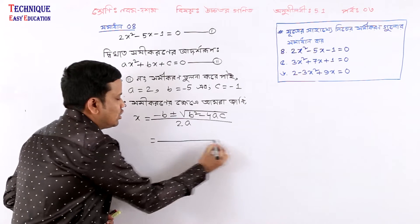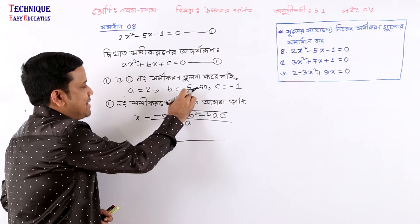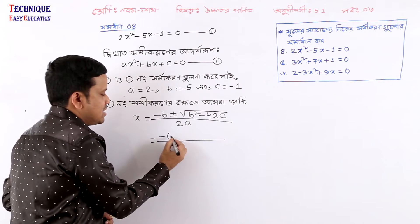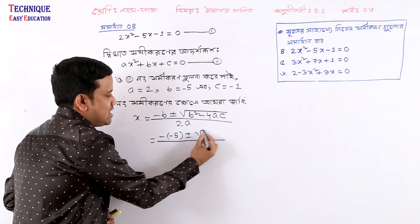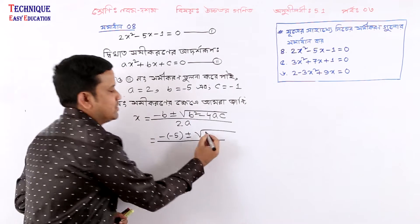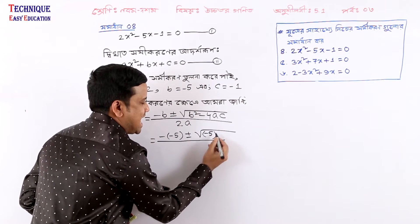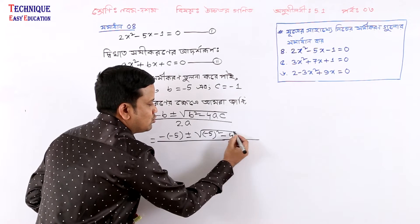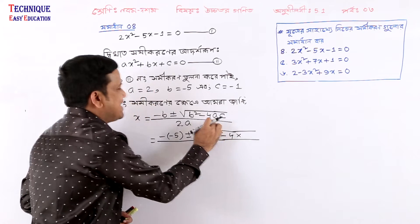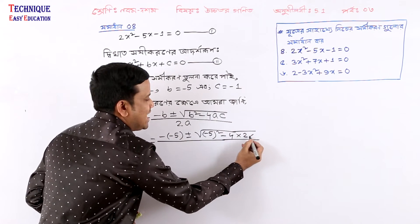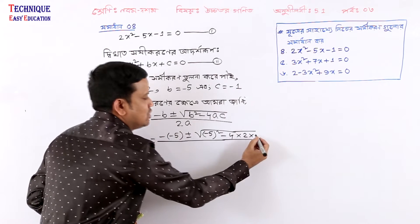So, minus b is minus 5. Plus or minus square root of b squared minus 4 times a. Here b is minus 5, so minus 5 squared, minus 4 into a, where a is minus 2.